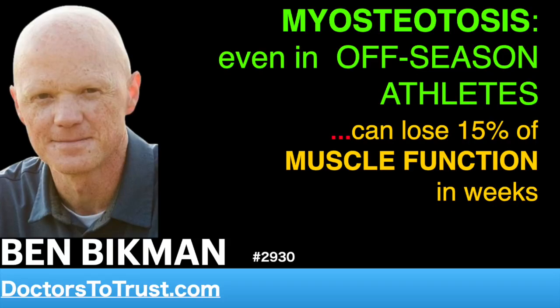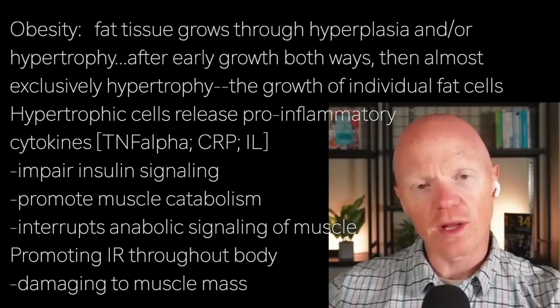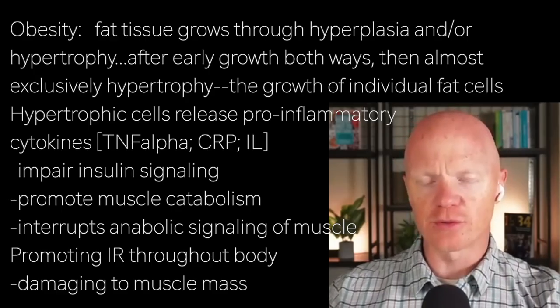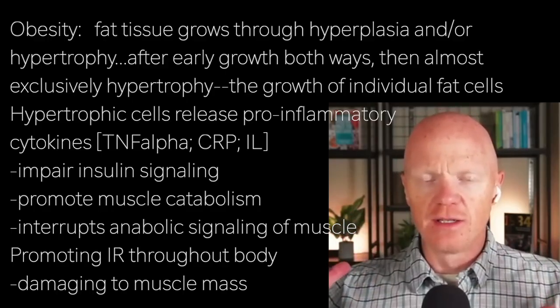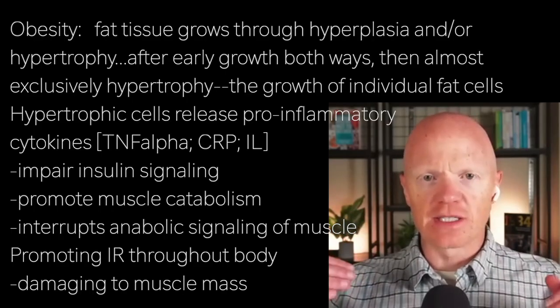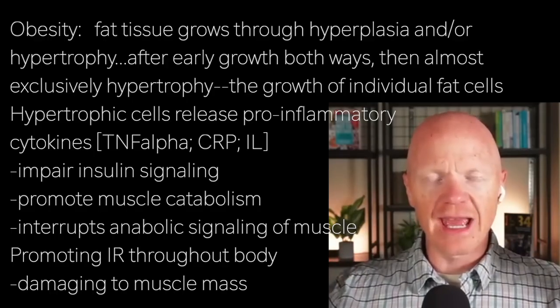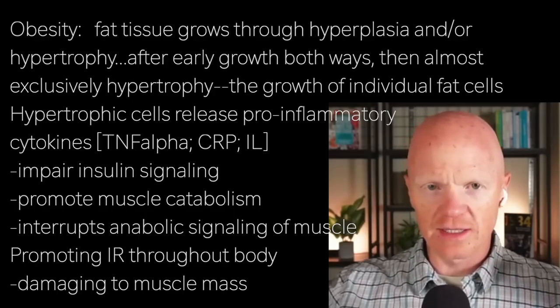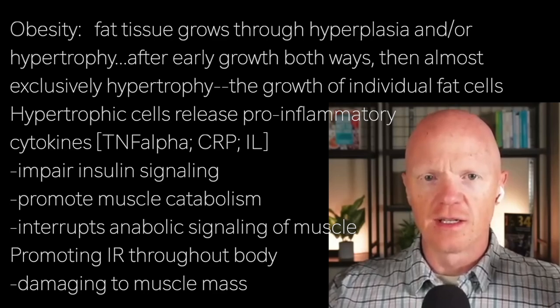Obesity introduces a different, but a little overlapping set of challenges. We've discussed previously that fat tissue grows through hyperplasia, which is the multiplication of fat cells, and/or hypertrophy, which is the volumetric expansion of each individual cell. At an initial point of fat gain you're going to have a little bit of both, but then after a little bit of fat gain, it's overwhelmingly going to be almost purely hypertrophy in the average individual.